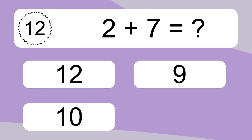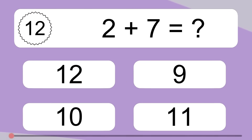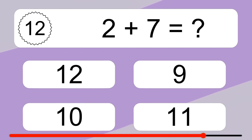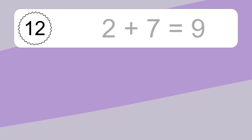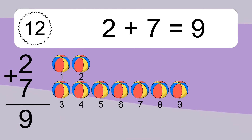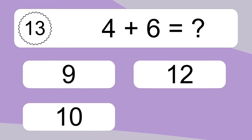2 plus 7 equals what? 2 plus 7 equals 9. Let's count it: 1, 2, 3, 4, 5, 6, 7, 8, 9.